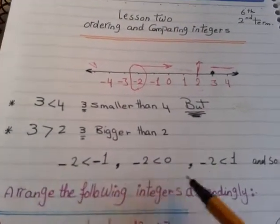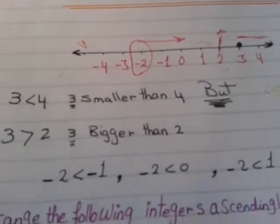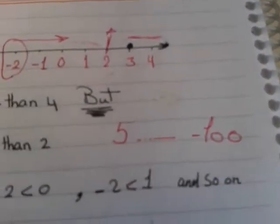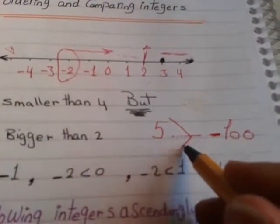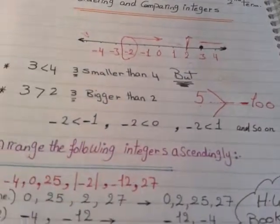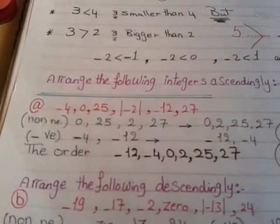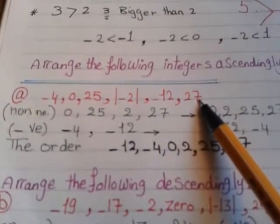To summarize: all positive numbers are bigger than all negative numbers, and zero is bigger than all negative numbers. Now let's study how to arrange and compare integers. For example, consider five and negative 100: even though 100 looks large, it is negative, and the positive number — no matter how small — is always bigger than any negative number. Now let's arrange the following integers in ascending form: negative 4, 0, 25, |−2|, negative 12, and 27.